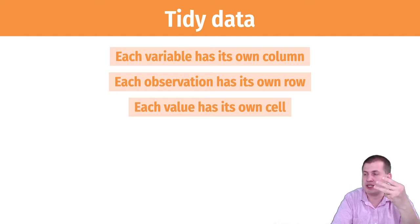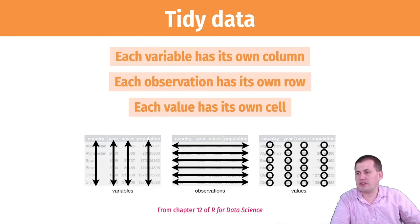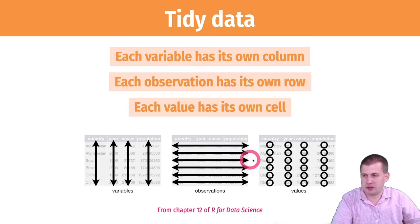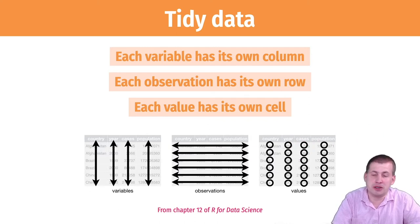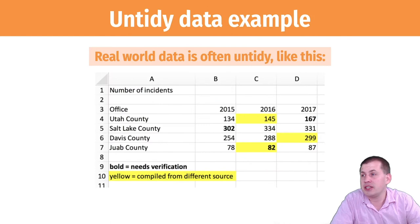The third requirement is that each value has its own cell. So you have variables as specific columns, observations as specific rows, and values in each of those cells. As long as you meet these three requirements, you have tidy data. You're already familiar with this concept — you just haven't heard it called tidy or untidy before.